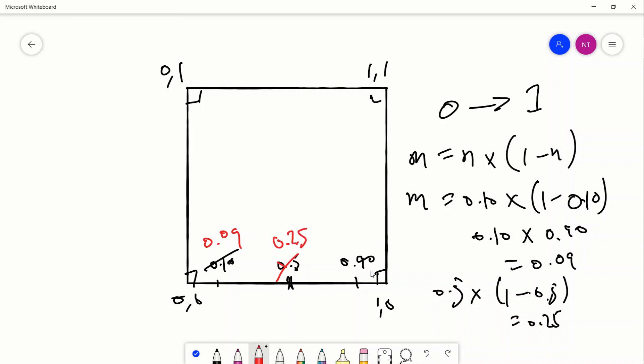Now what happens when we apply this to 0.9? So we have 0.9 times 1 minus 0.9, that's equal to 0.9 times 0.10. But hold on, 0.9 times 0.10 is the exact same as 0.10 times 0.9. So we get 0.09. So the 0.9 becomes 0.09, which is the exact same as this.